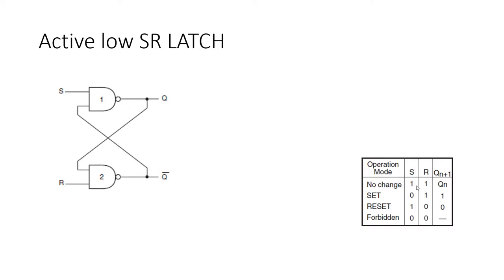If S=0 and R=1, then Q(N+1) will be 1. If S=1 and R=0, the next state will be 0. If S=0 and R=0, both Q and Q̄ — the normal output and inverted output — both become 1, which is a problem since normal form and complement form cannot be the same.